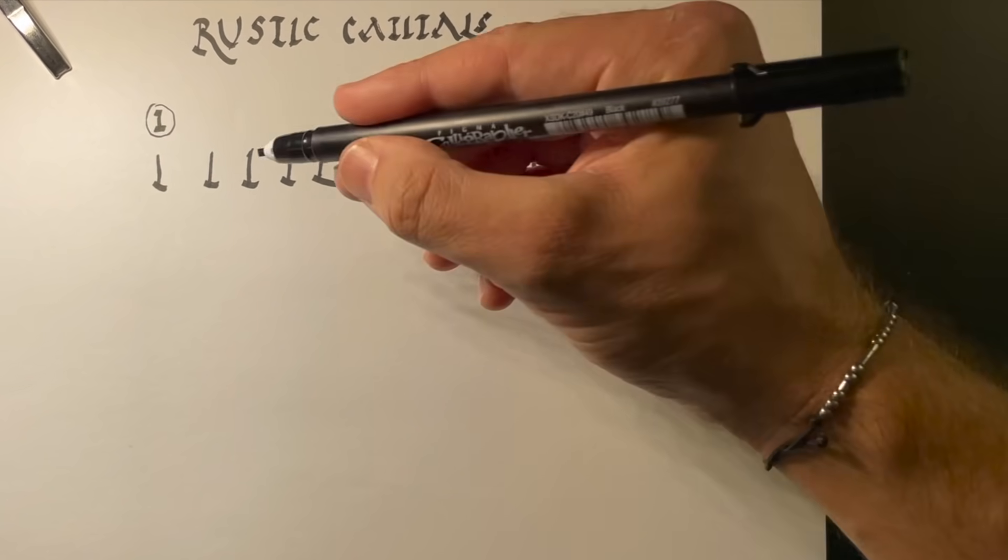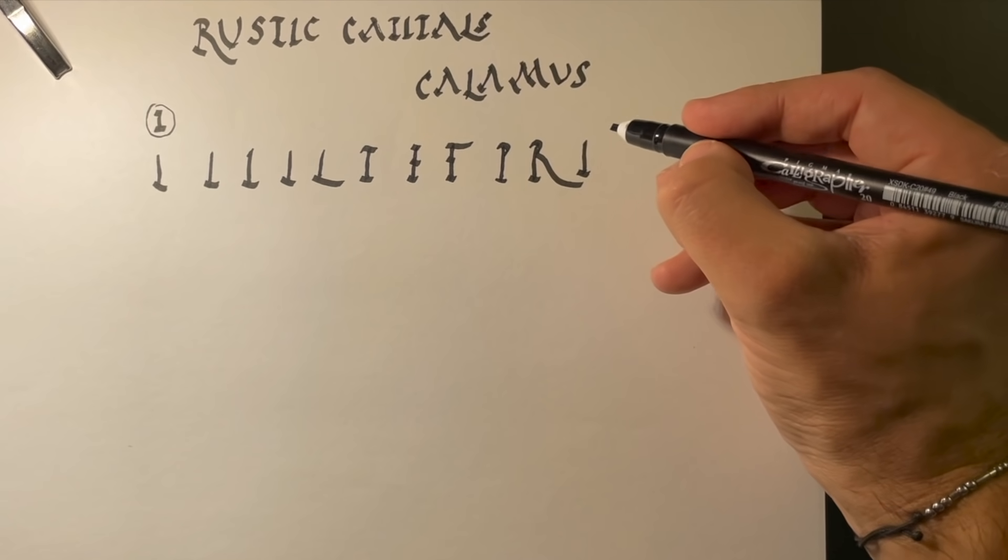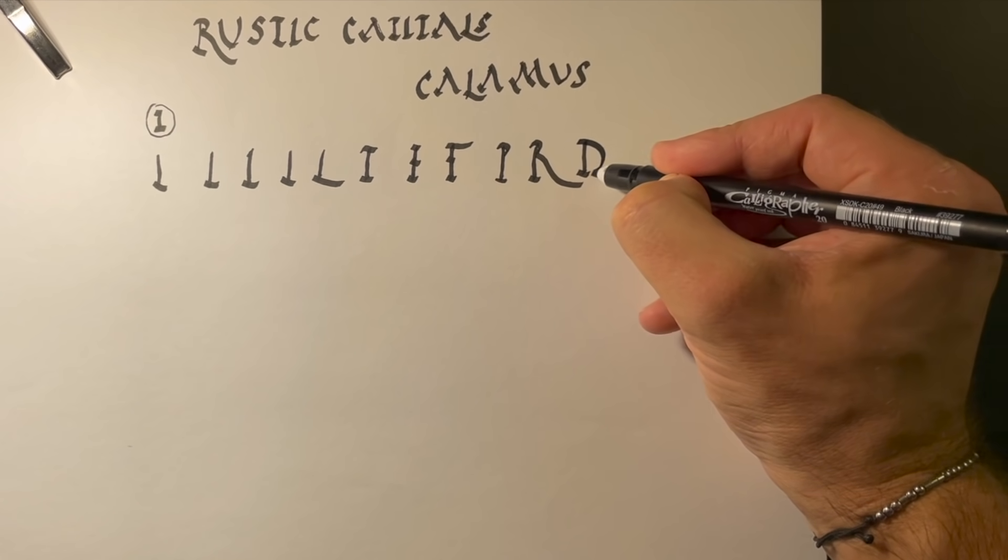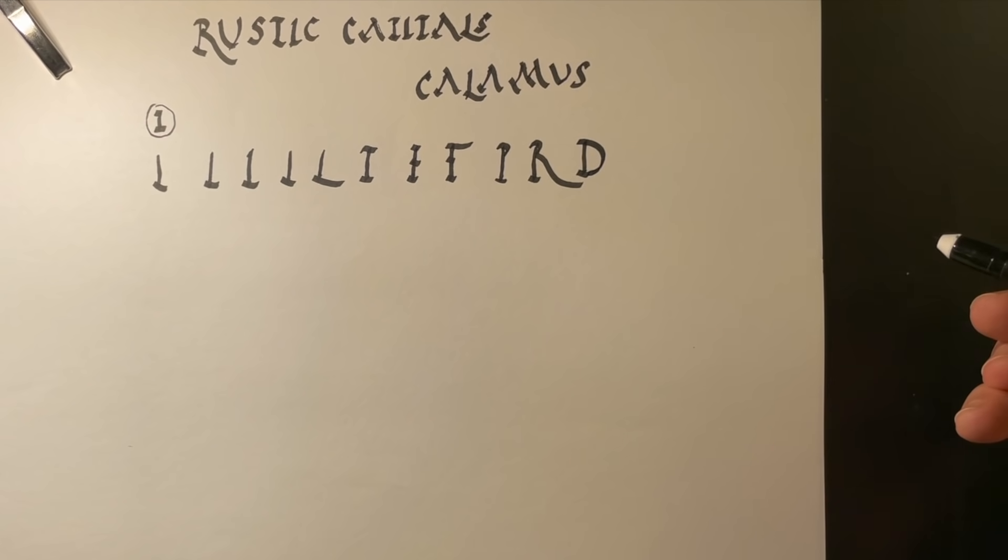Using, again, this basic I, the letter I matrix, we can take this, and then we can just add on to it that, and we get the letter D.